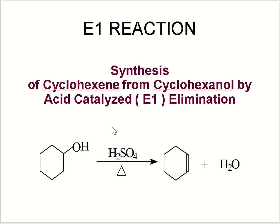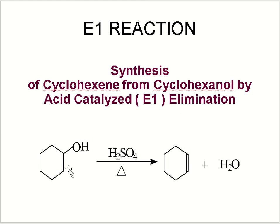First, we take cyclohexanol and add an acid — it can be hydrochloric acid, sulfuric acid, or phosphoric acid. Any strong acid can be used. This is an acid-catalyzed elimination reaction, and after that a water molecule is formed as it leaves the cyclohexanol due to acid catalysis and heat.